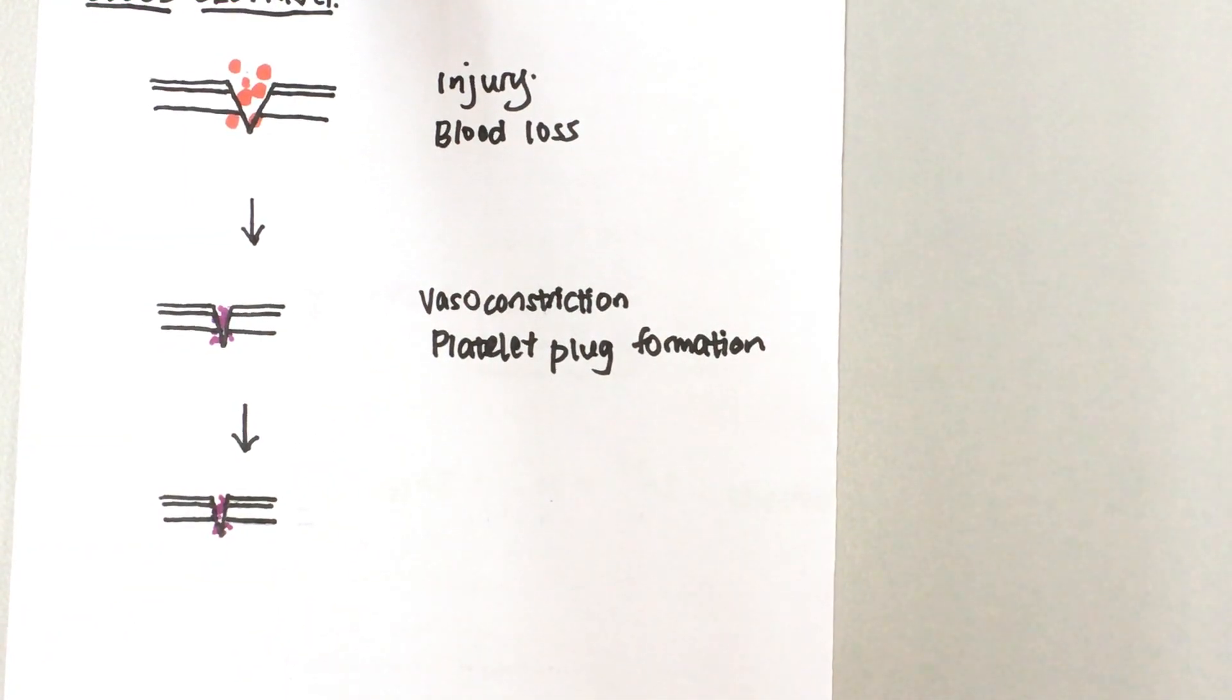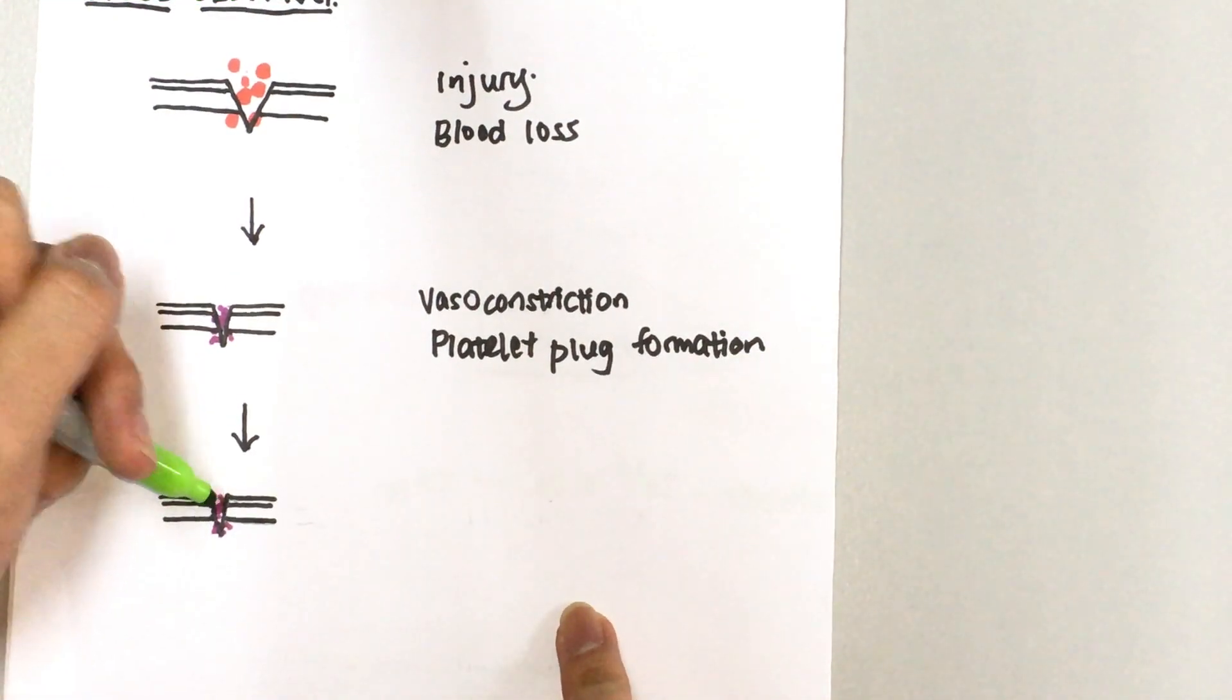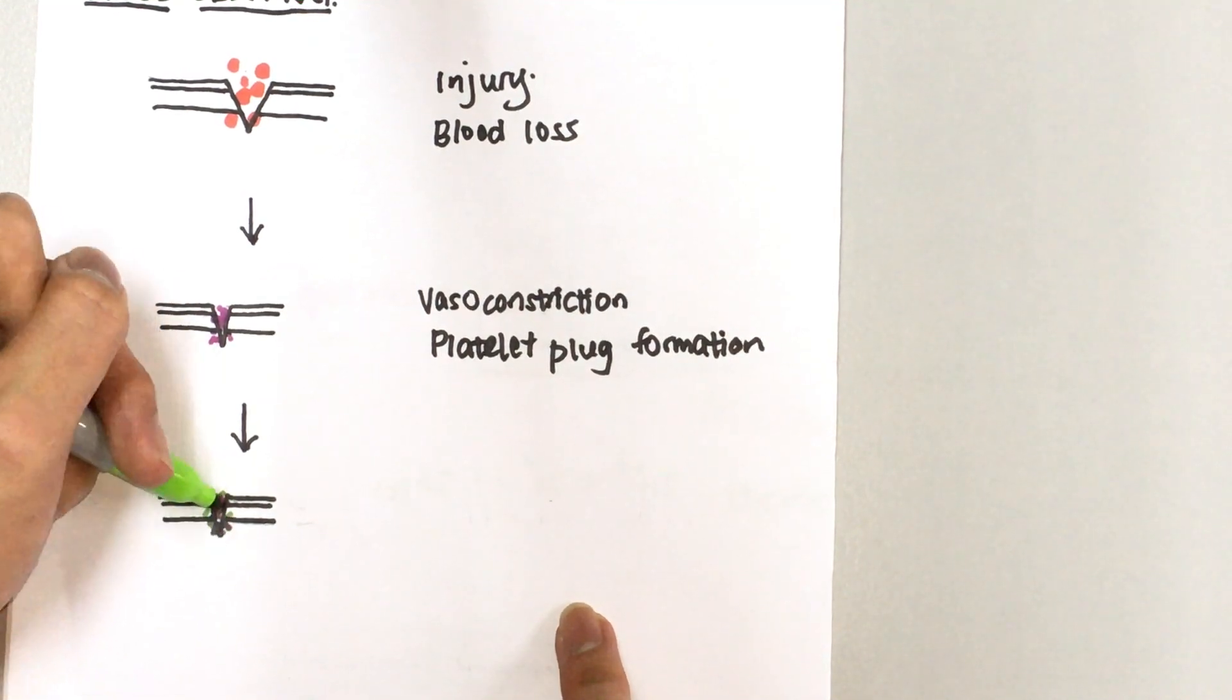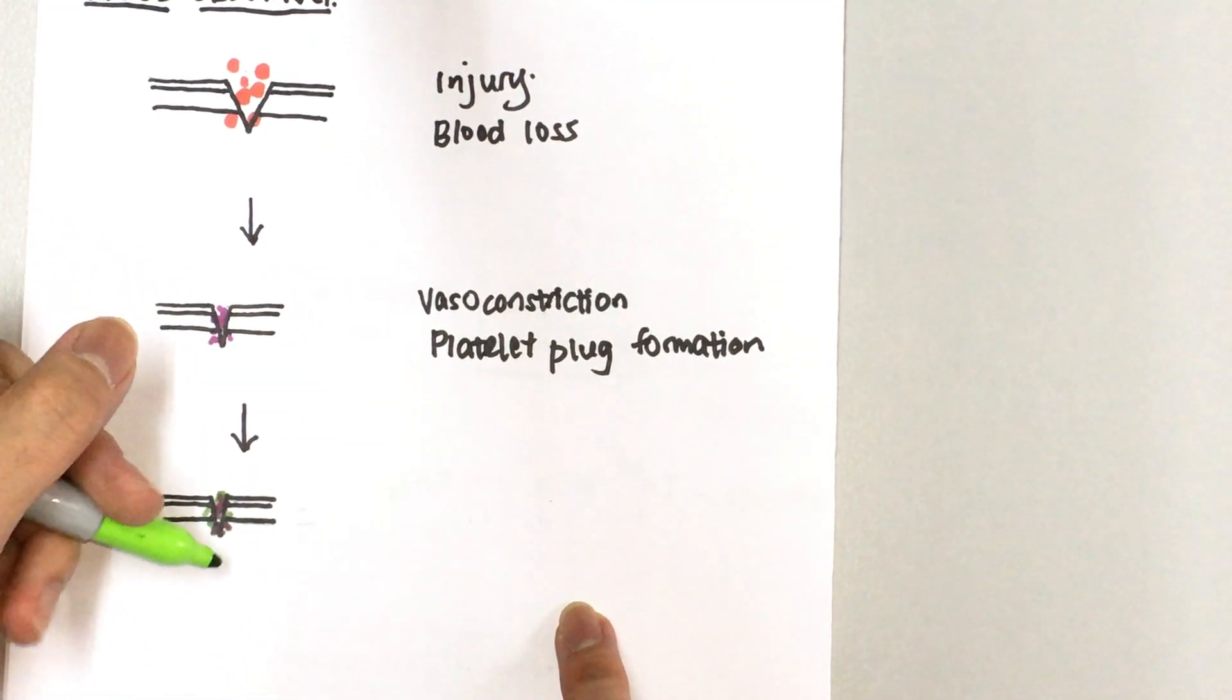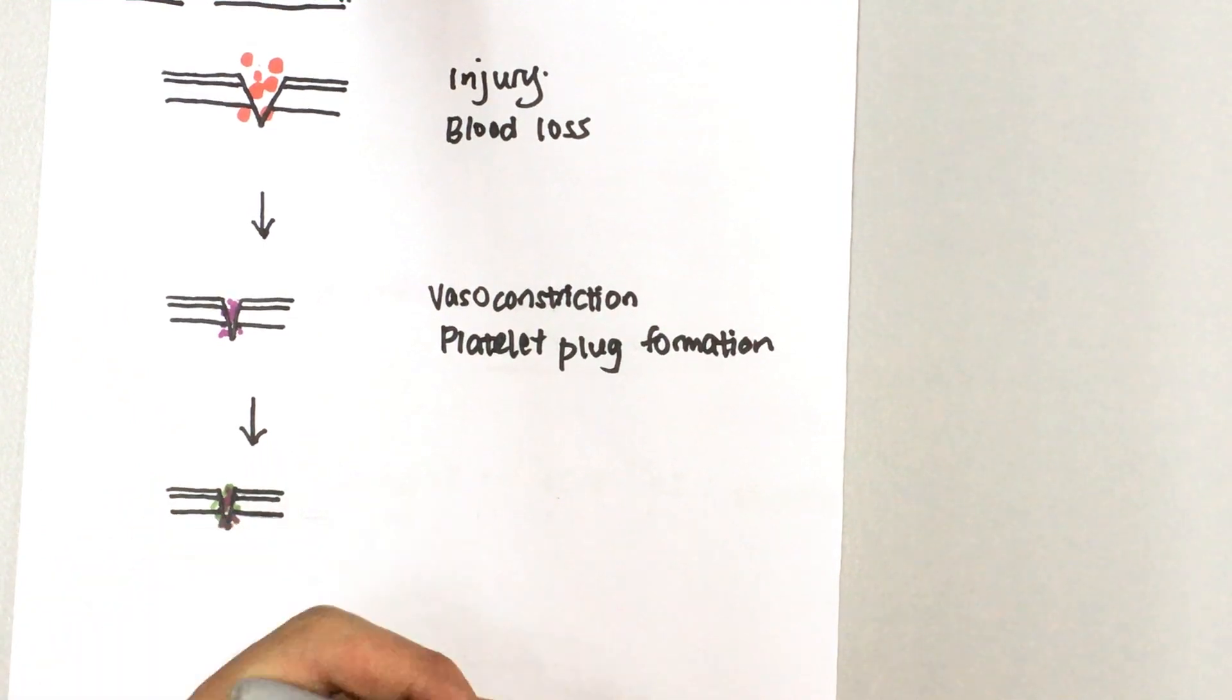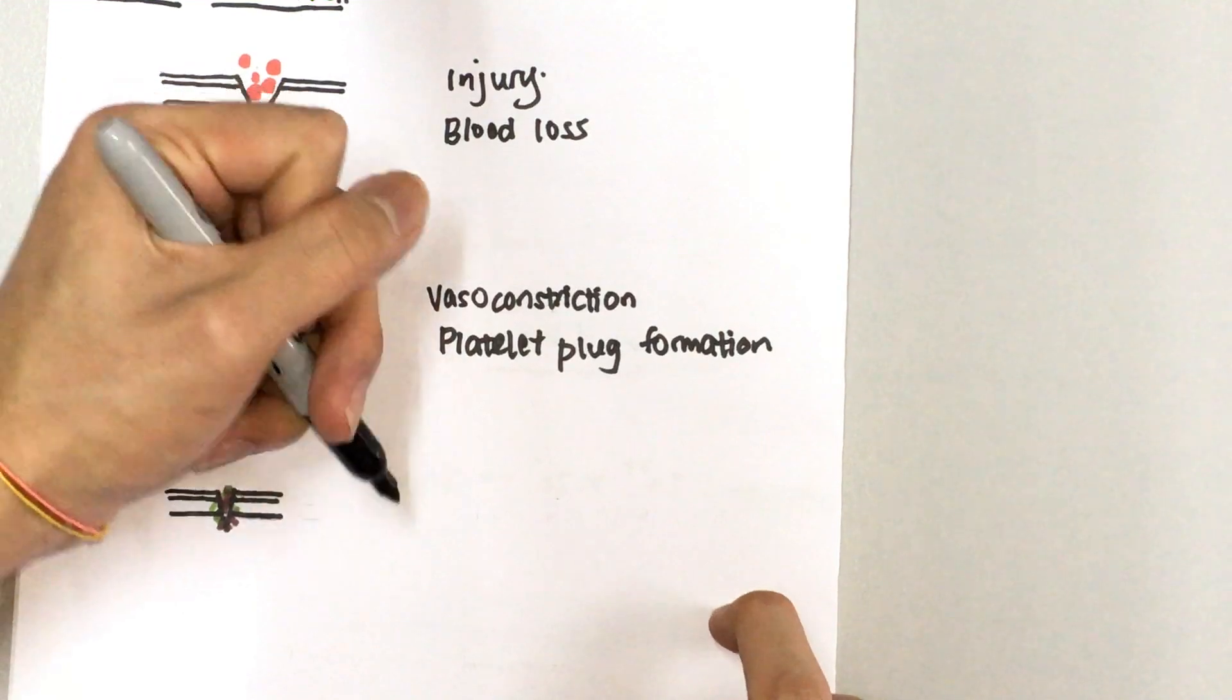Now the final step here is what we call a fibrin mesh. Alright, so fibrin fibers will form like a net all over the platelet so that would strengthen it, and in the end you will get a scab. So here...